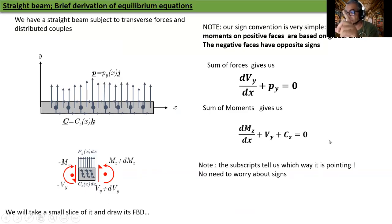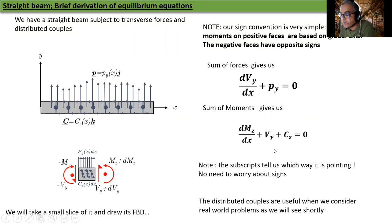Sum of moments gives us DMZ/DX plus VY plus all the internal couples must be equal to 0. Note, the subscript tells us which way it is pointing. No need to worry about the signs. This is a direct way. We didn't go through the vector version. The distributed couples are useful when we consider real world problems as we shall see shortly.